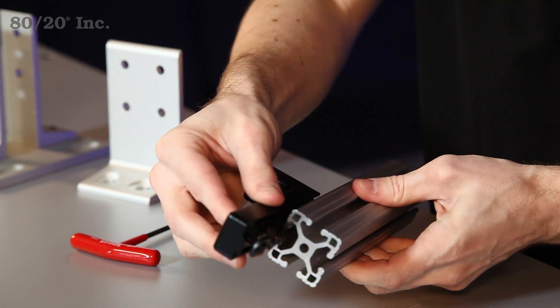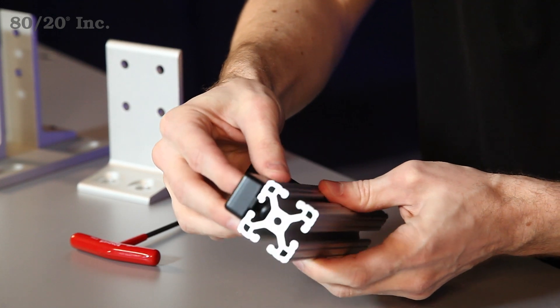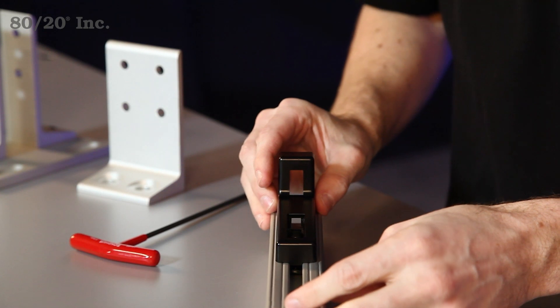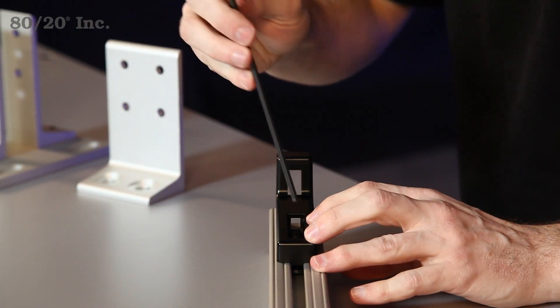Once we have that on there, we'll take our extrusion, we'll slide the bracket right onto it, we'll get it into position, and we'll tighten it down with our wrench.